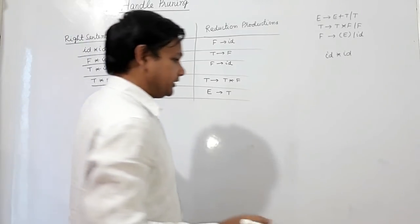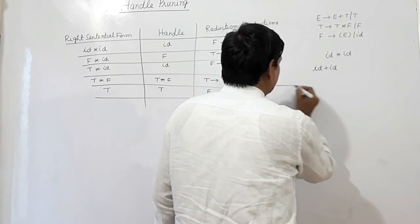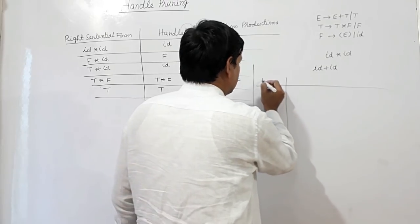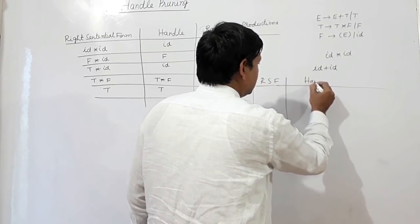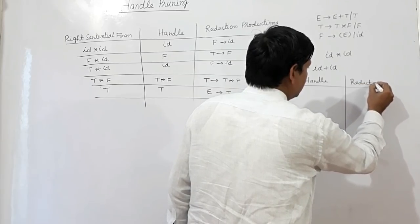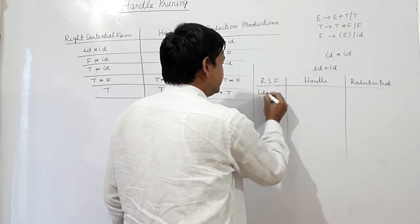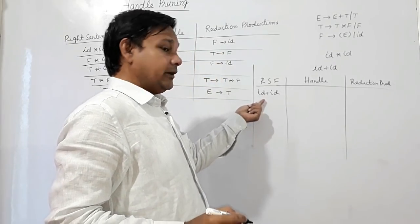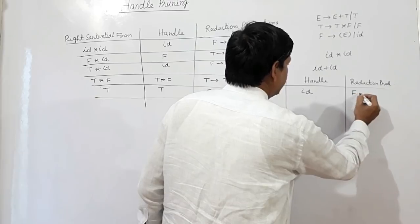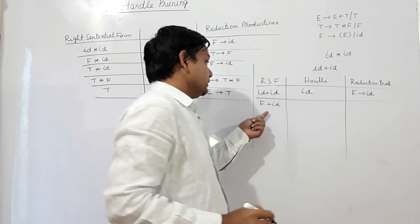Now I will see one more example: id plus id. The right sentential form is id plus id. I will take this id as the handle, and id can be reduced by F. Now it will be F plus id.